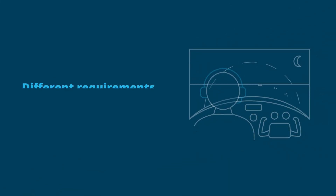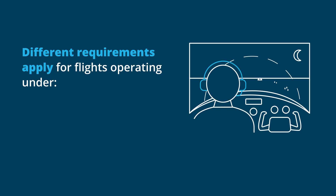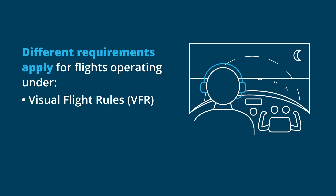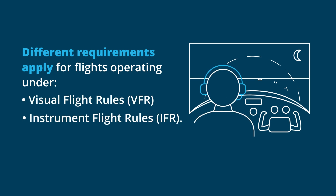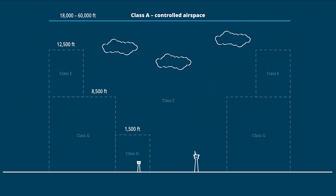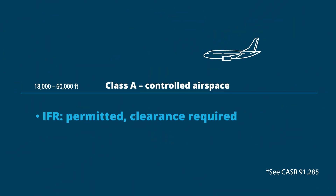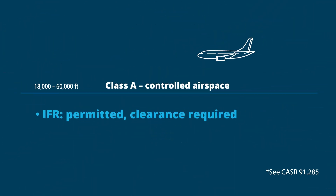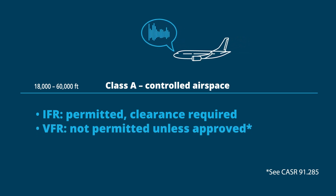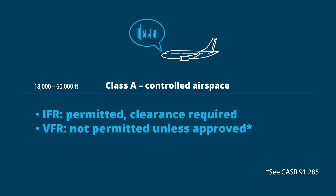Different requirements apply for flights operating under visual flight rules and instrument flight rules. Class A is mainly used by commercial jets. IFR flights are permitted and require clearance. VFR flights are not permitted unless approved.